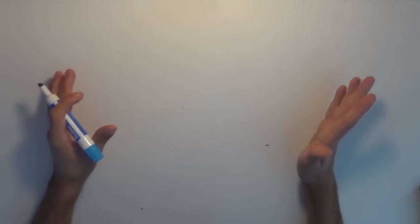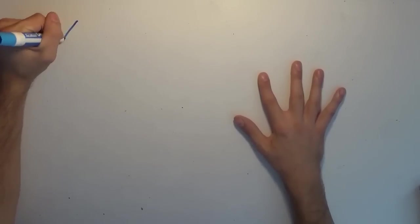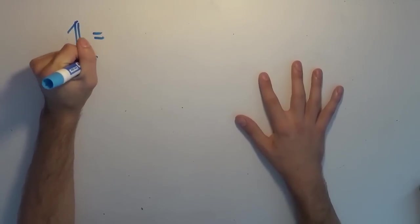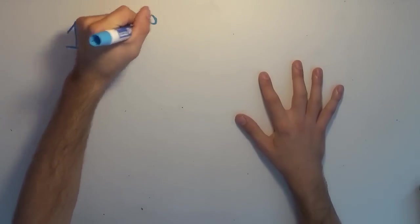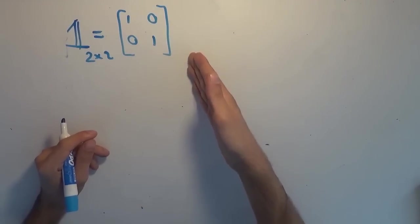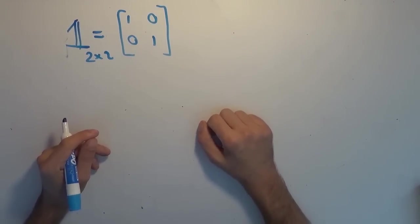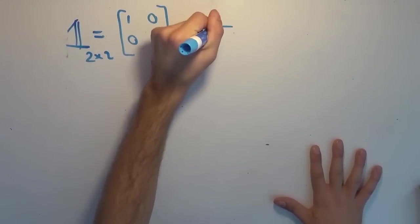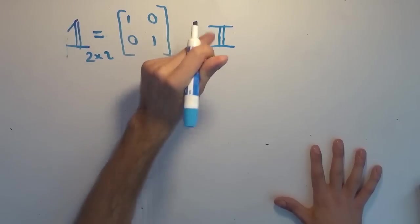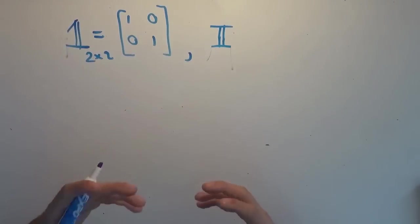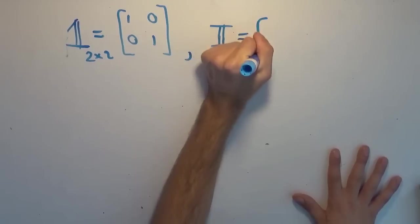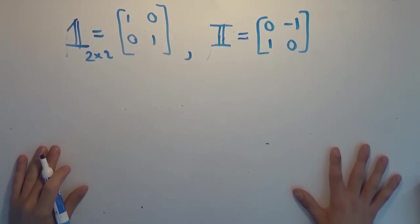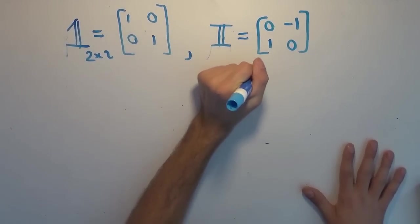Just to give a quick recap: we have the identity matrix, represented by a fancy one, equal in the two-by-two case to the matrix [1, 0; 0, 1]. If you multiply this matrix by any two-row matrix, you get back that same matrix. We also have what you could almost call the imaginary identity — the representation of i as a two-by-two matrix — which is equal to [0, -1; 1, 0].